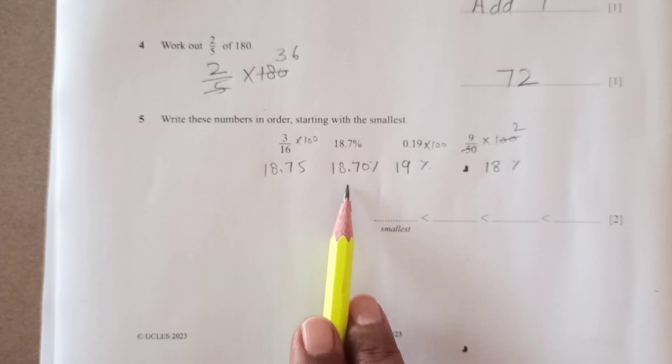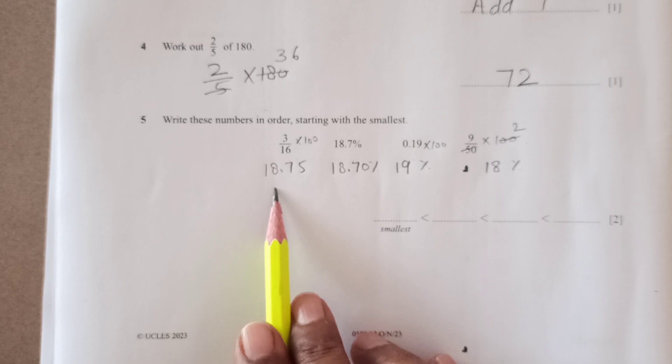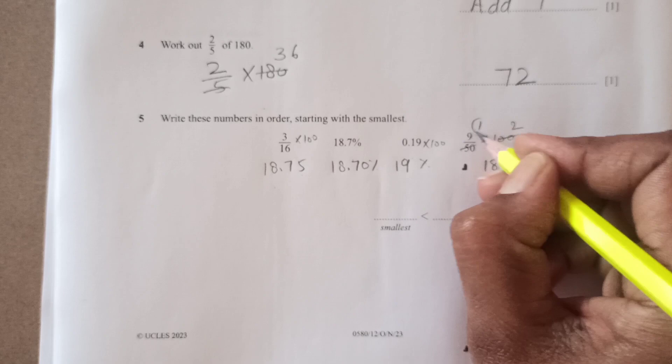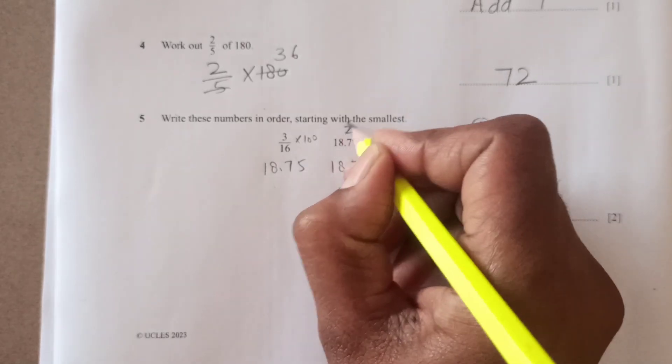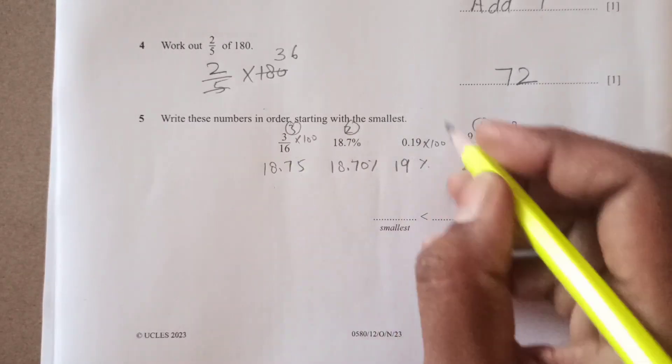So now you can see which one is the smallest here. The smallest one is here, 18.75. This one is the smallest one, number one. Then we have 18.7. Then we have this and the last one is.